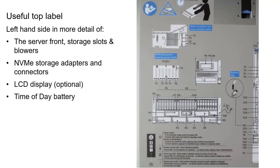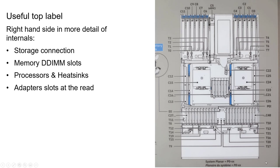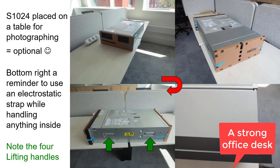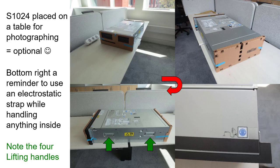I zoomed in a little bit. The left-hand side label shows the front storage, NVMe storage adapters, LCD display, and the time update battery. Then I zoomed into the other side — this is what we'll see when we lift the top, showing all the components with numbering so you know what's what. We lifted it onto the office desk for more photographing — this is optional, you don't have to take lots of pictures of your beautiful new S1024, but we did.